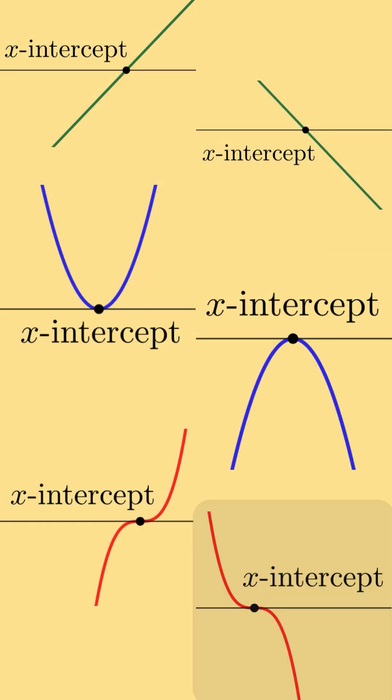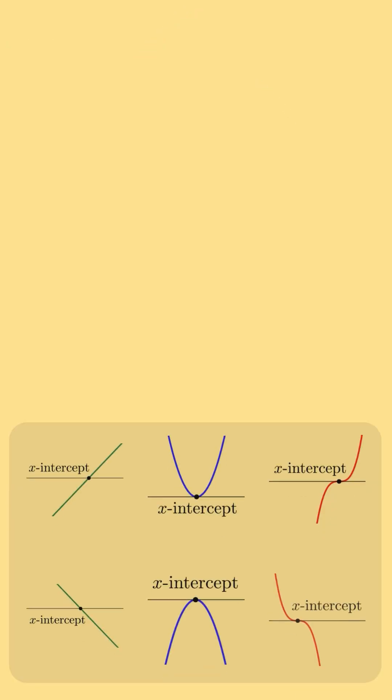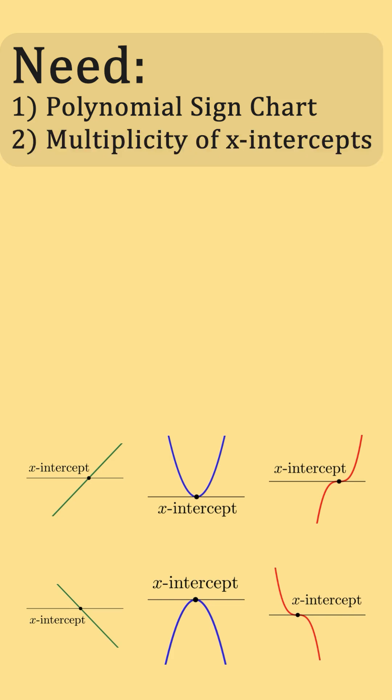There are six potential x-intercept behaviors for polynomials. We'll need the polynomial sign chart and the multiplicity of each x-intercept to pick the appropriate behaviors.